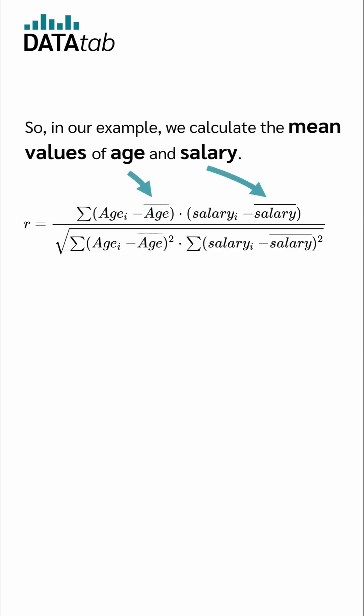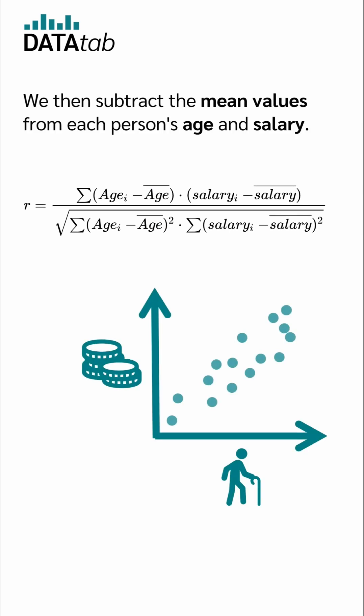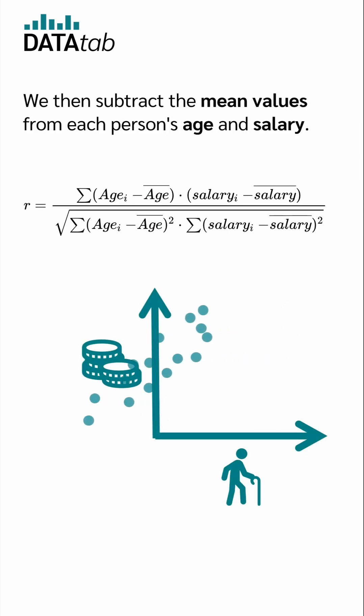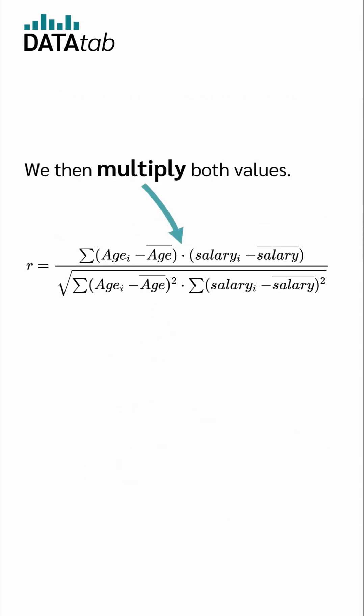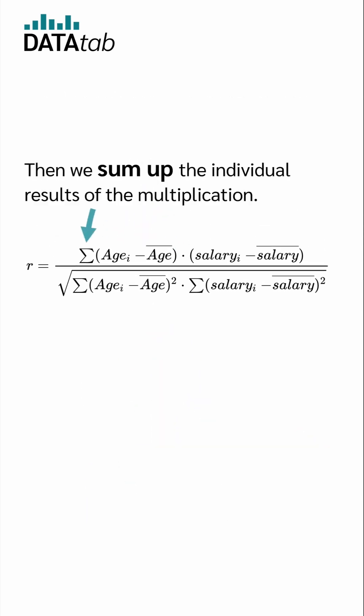So, in our example we calculate the mean values of age and salary. We then subtract the mean values from each person's age and salary. We then multiply both values, and then we sum up the individual results of the multiplication.